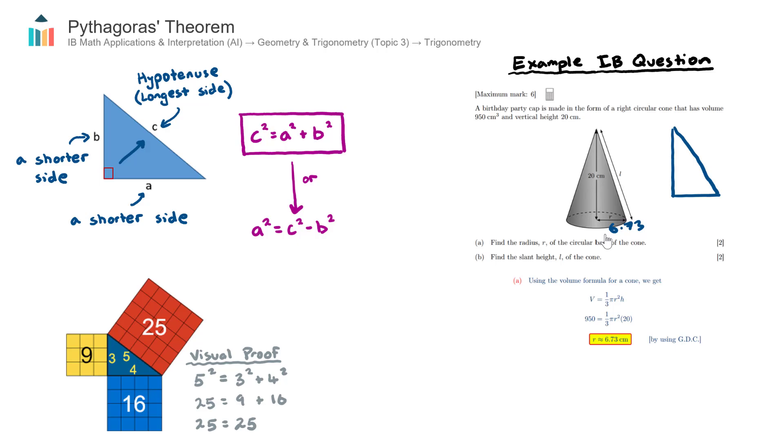This is a right angle. This length here is 20. This length here is 6.73. And we are trying to find l, the slant height, which happens to be the hypotenuse because it is opposite the right angle. So let's go ahead and use Pythagoras' theorem here to find the length of l.